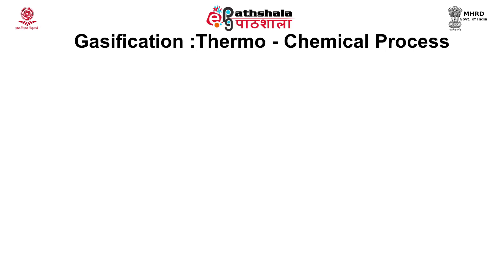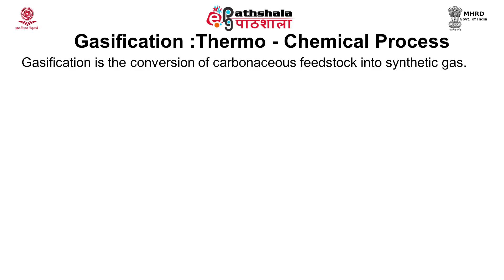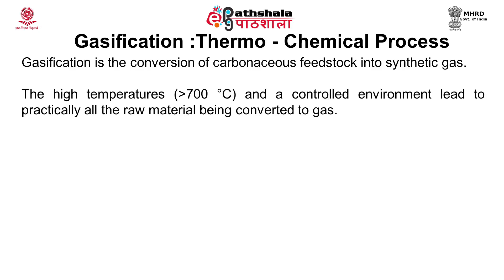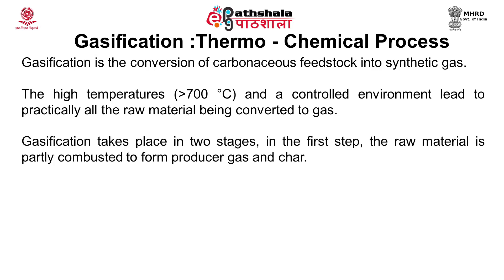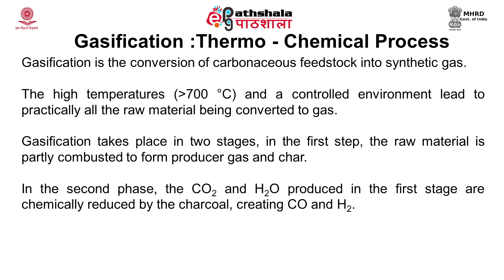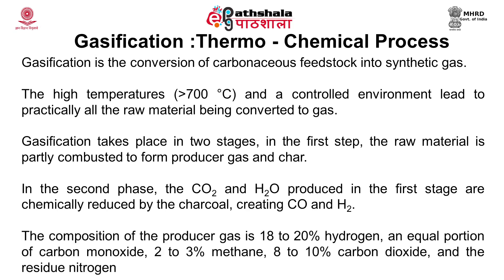Gasification is also a thermochemical process. Here the conversion of carbonaceous feedstock into synthesis gas, or syngas, occurs. High temperatures above 700°C in a controlled environment lead to practically all raw material being converted to gas. Gasification takes place in two stages: in the first step the raw material is partly combusted to form producer gas and charcoal; in the second phase, carbon dioxide and water produced in the first stage are chemically reduced by the charcoal, creating carbon monoxide and hydrogen. The composition of producer gas is 18–20% hydrogen, equal portions of carbon monoxide, 2–3% methane, 8–10% carbon dioxide, and residual nitrogen.